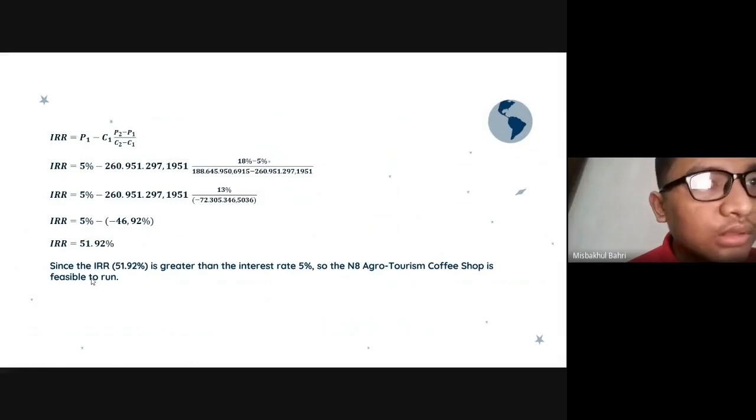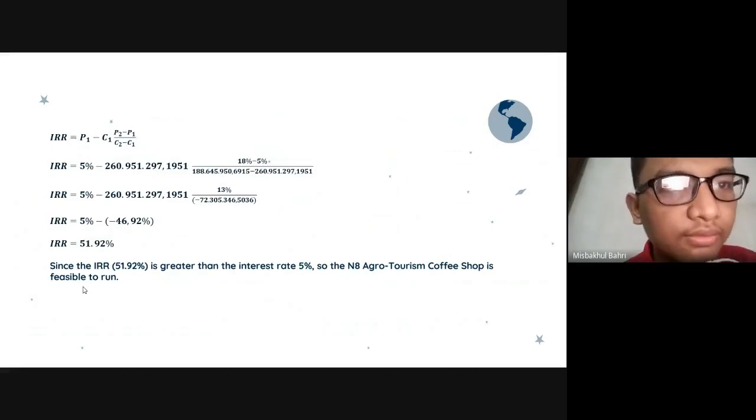So the IRR equals P1 minus C1 times P2 minus P1 over C2 minus C1. We substitute every value: IRR equals 5% minus 260,951,297 times 18% minus 5% over 188,645,950,695 minus 260,951,297.